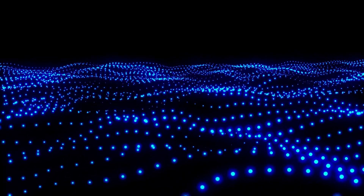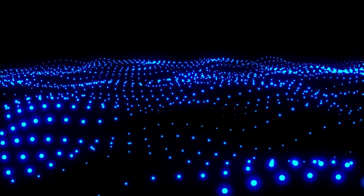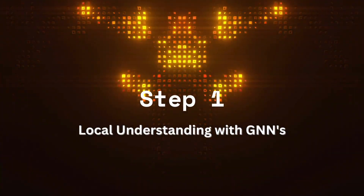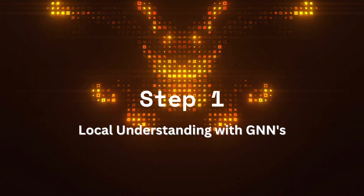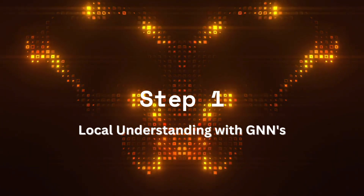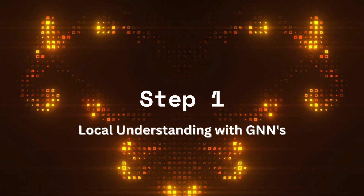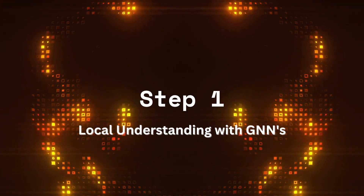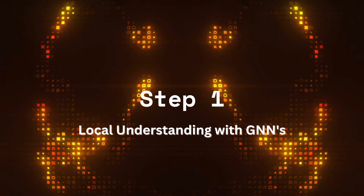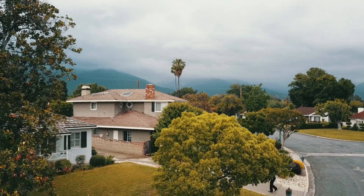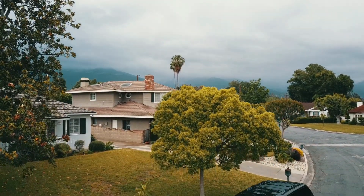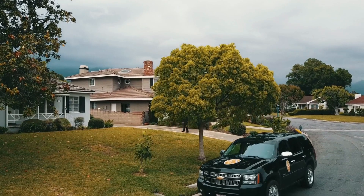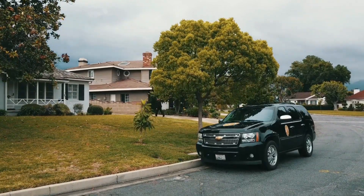SAT does just that, blending the strengths of GNNs and transformers to understand both the close neighbors and distant locations in a network. The structure-aware transformer is like a two-step process. Step one: local understanding with GNNs. Before diving deep, SAT first tries to understand the immediate neighborhood around each location in the network using a graph neural network. But instead of just chatting with direct neighbors, it looks at the entire mini-neighborhood, creating what we call structure-aware representations.